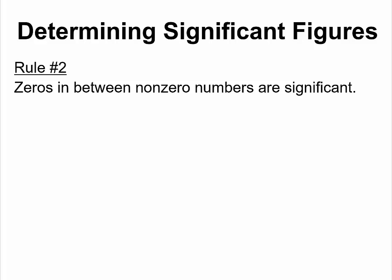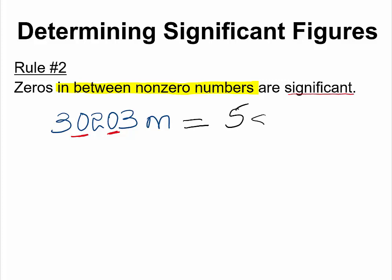Rule number two: all the zeros in between non-zero numbers are considered significant. Let us take a look at an example. If you have a measurement that looks like this: 30203 meters. These zeros in between non-zero numbers are considered significant, which means this measurement would end up as a five significant figures number.